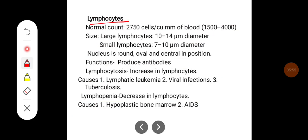Lymphocytes normal count is around 2750 cells per cubic millimeter of blood, can range between 1500 to 4000. Large lymphocytes size is around 10 to 14 microns and small lymphocytes 7 to 10 microns, similar as that of RBC.